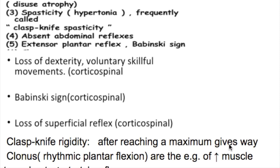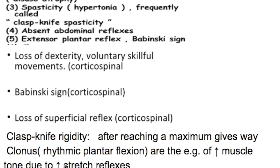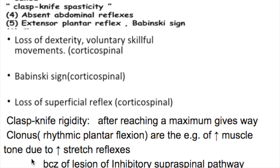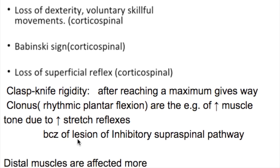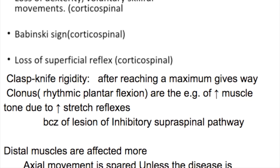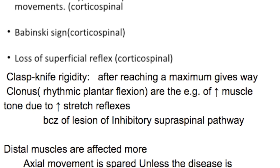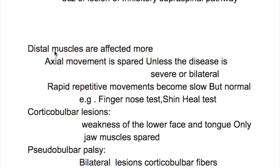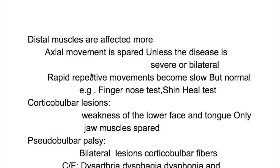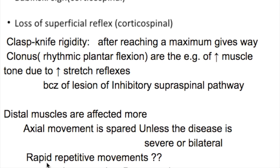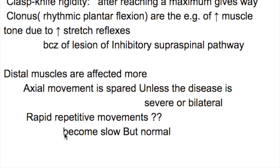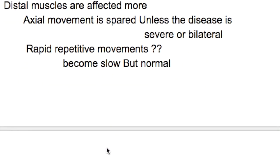Clasp-knife rigidity is when resistance reaches a maximum and then gives way. Clonus is rhythmic plantar flexion — an example of increased muscle tone due to stretch reflexes — caused by lesions of the inhibitory supraspinal pathway. In upper motor neuron lesions, distal muscles are affected more, while axial movement is spared unless the disease is bilateral. The upper motor neuron affects more anti-gravity muscles: flexors of the upper limb and extensors of the lower limb.